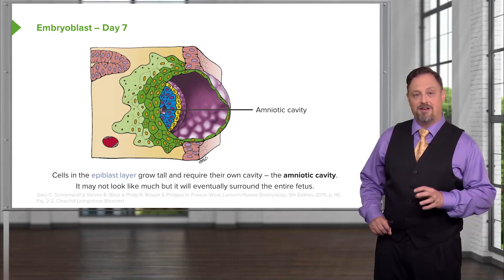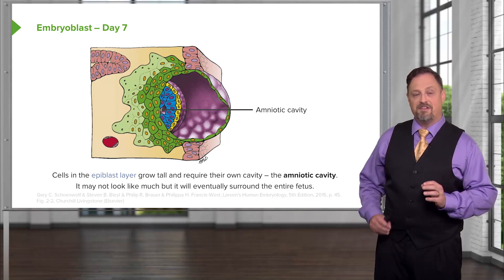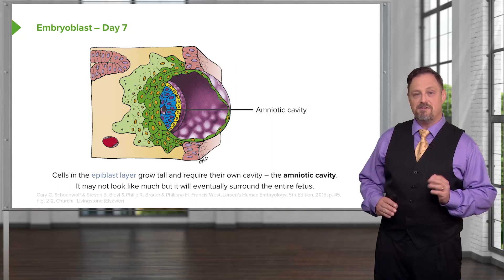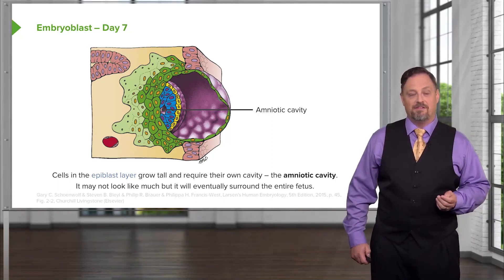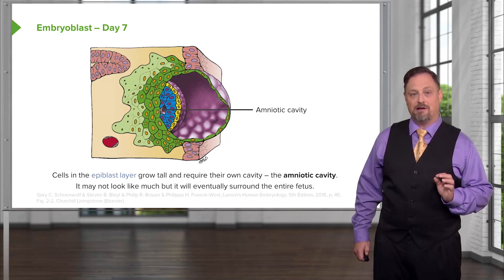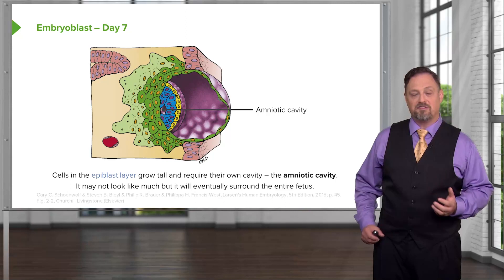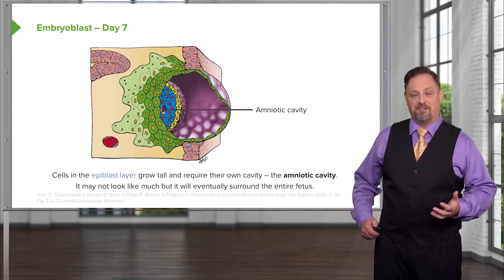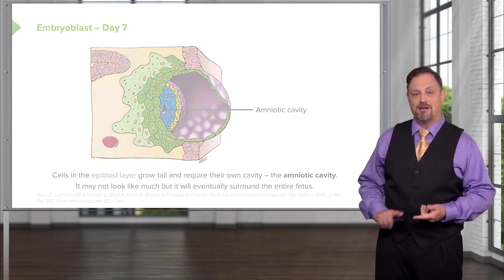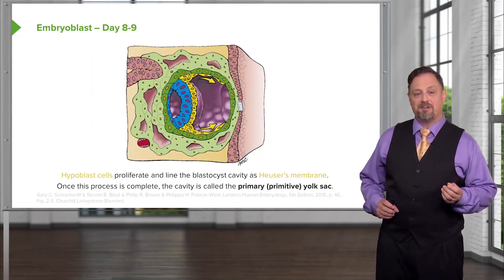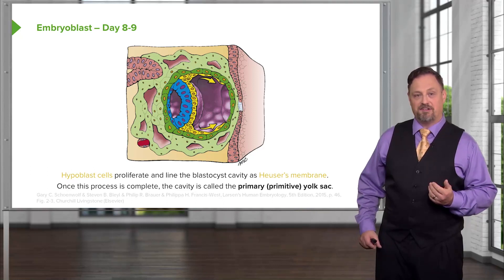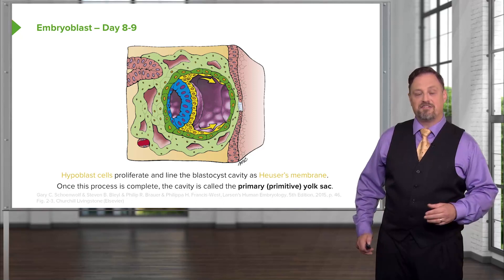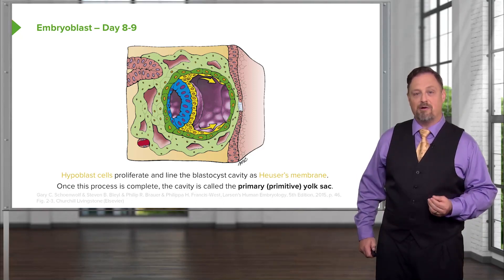Moving into the uterus, the developing blastocyst has the epiblast and hypoblast cells carry out several key changes. In particular, a small cavity forms in the epiblast cells called the amniotic cavity. This tiny cavity will eventually surround the entirety of the embryo and fetus, forming the fluid environment that supports and nurtures it throughout development. Meanwhile, the hypoblast cells proliferate and spread out across the blastocyst cavity, and once they have completely extended what is sometimes called Heuser's membrane throughout that space, the entire cavity transitions to become the primary yolk sac.